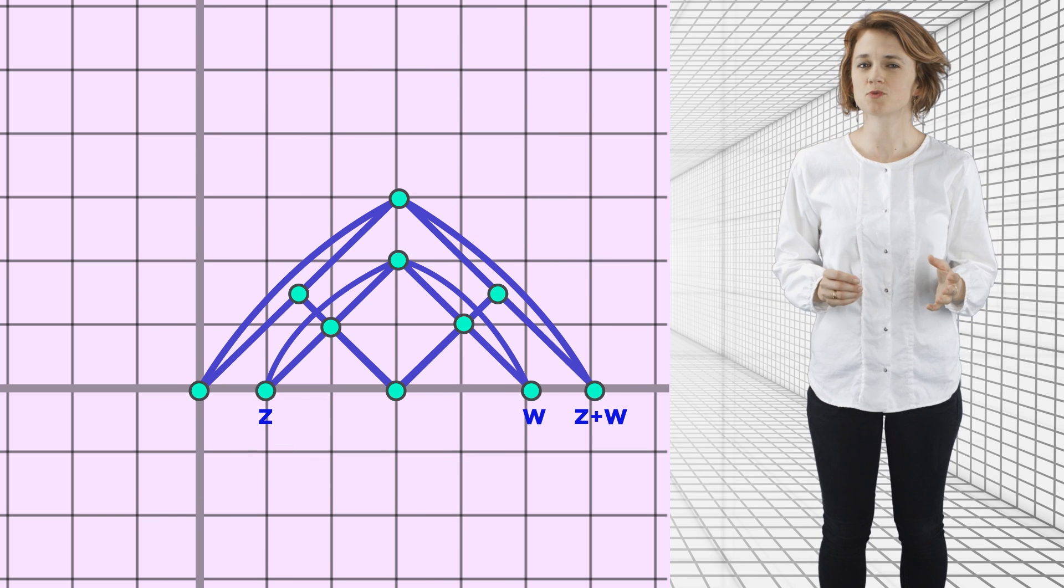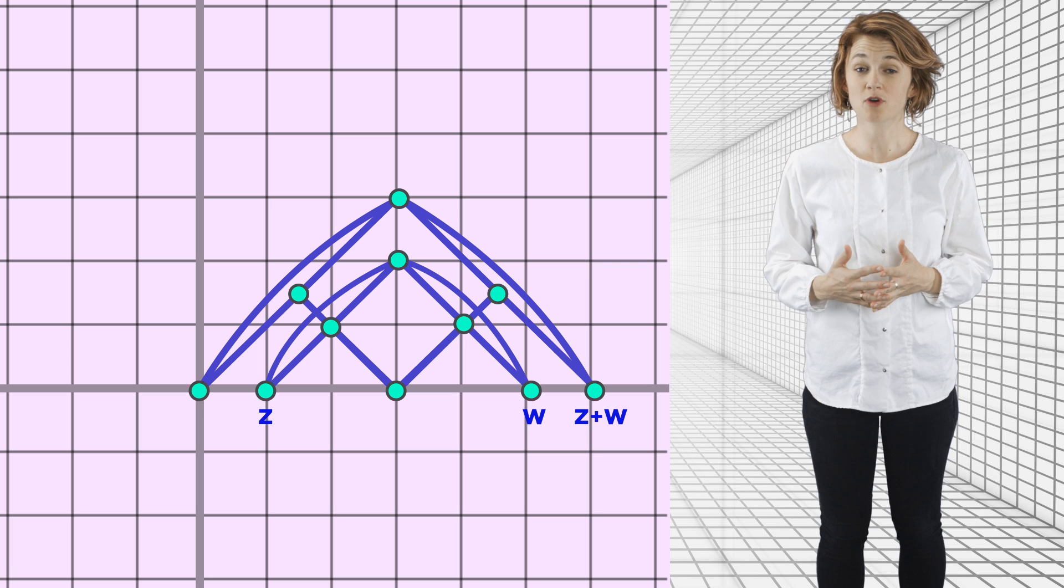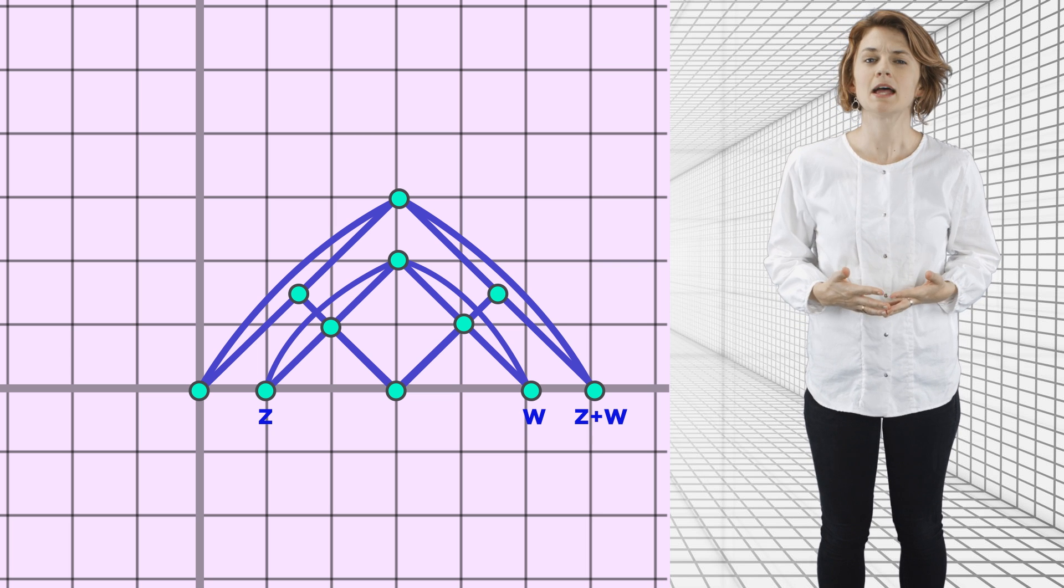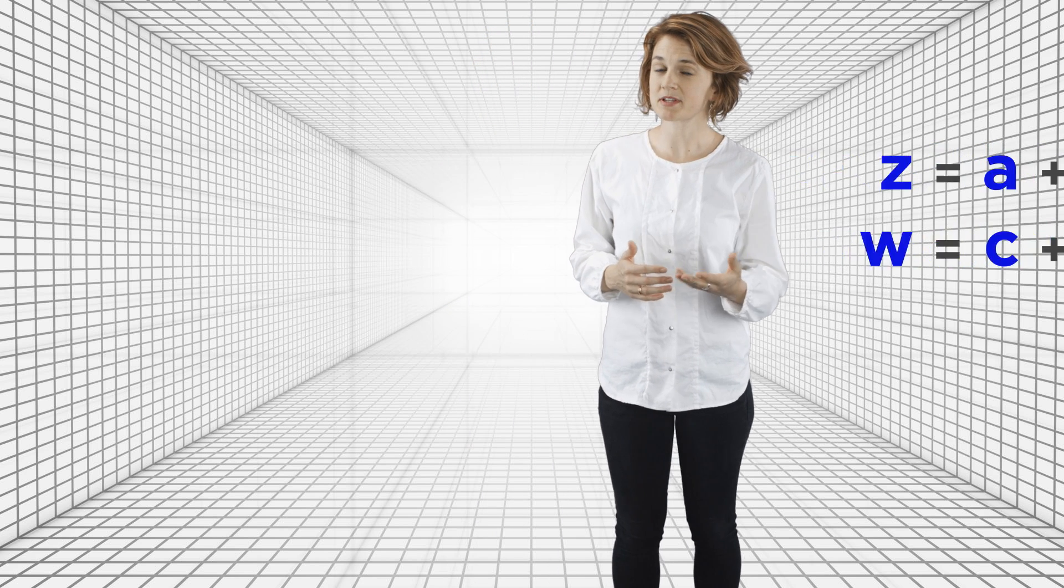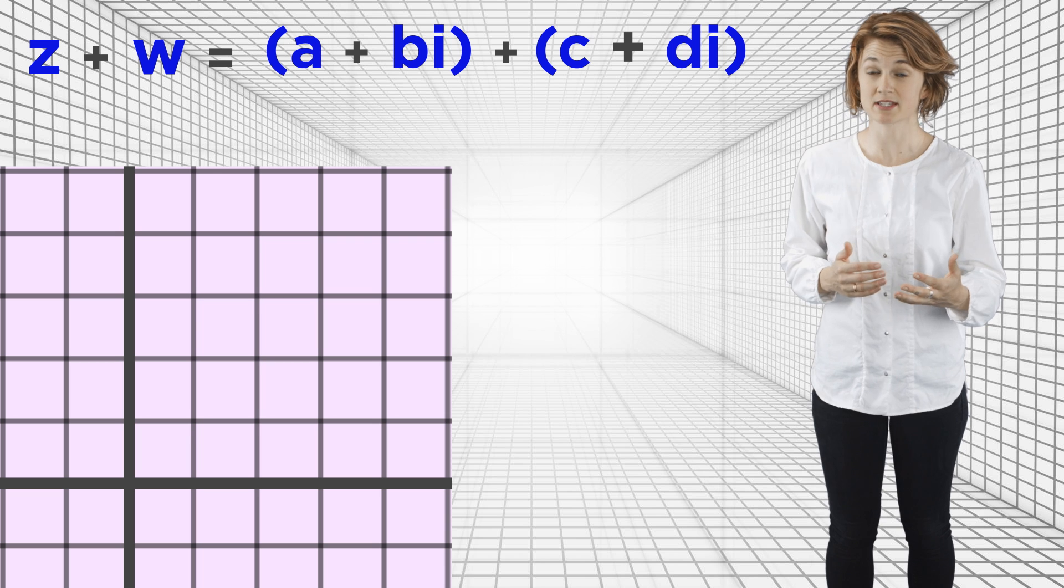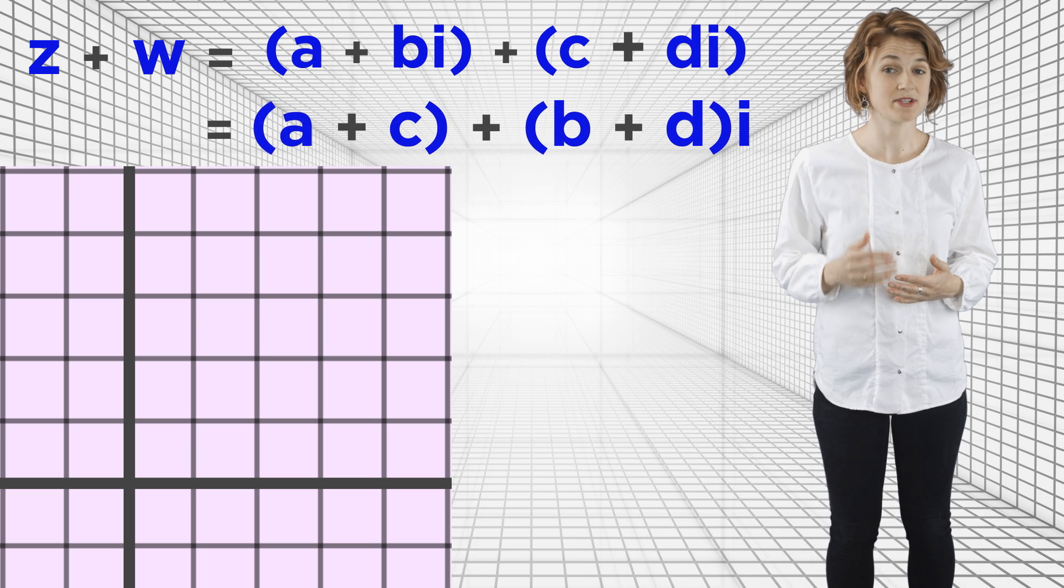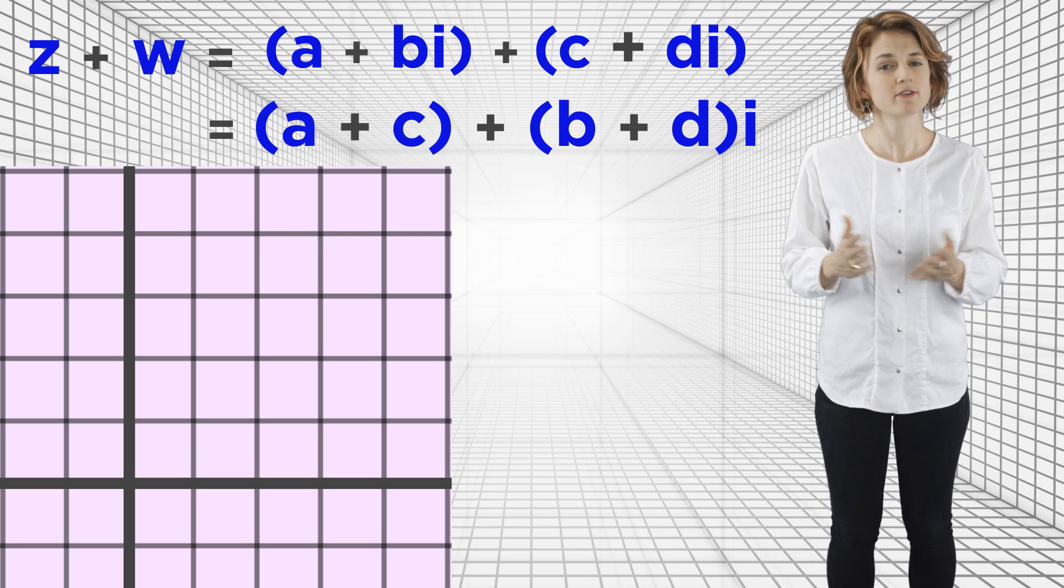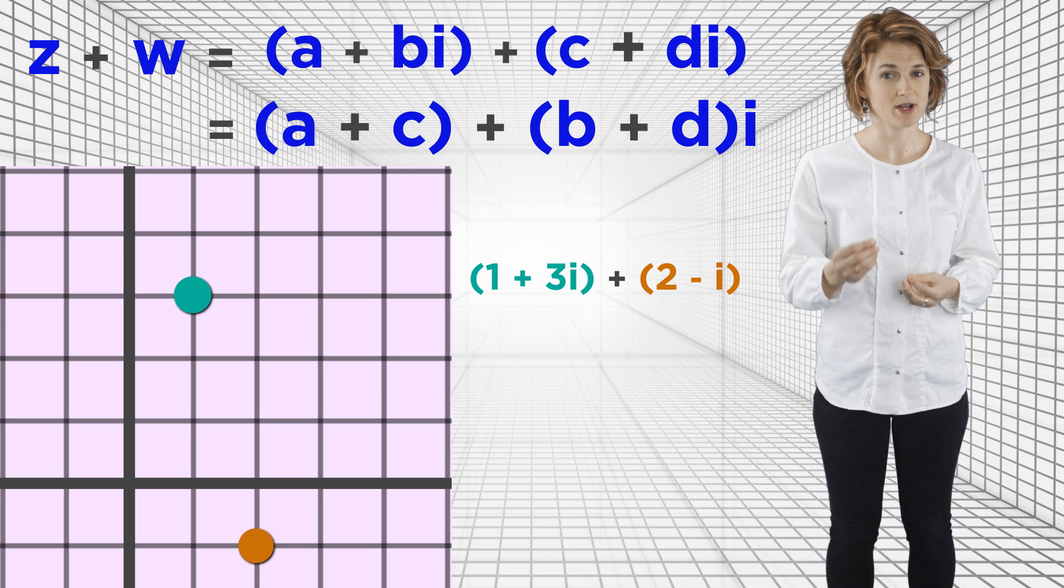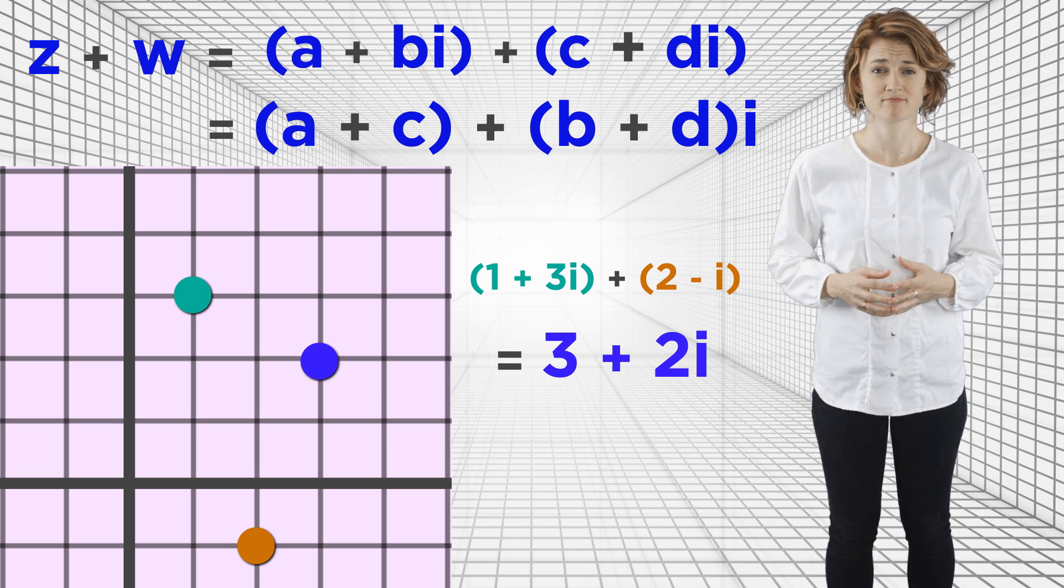Here's a linkage, which we could call the addition linkage, that adds two complex numbers, z and w, together. Let's be precise about what it means to add two complex numbers, z equals a plus bi and w equals c plus di, together. How do we write z plus w? Easy. We just add their real parts together and add their imaginary parts together. So z plus w equals a plus bi plus c plus di, which is a plus c plus b plus di. For example, 1 plus 3i plus 2 minus i is 3 plus 2i. But that's adding with algebra. How do you add with linkages?